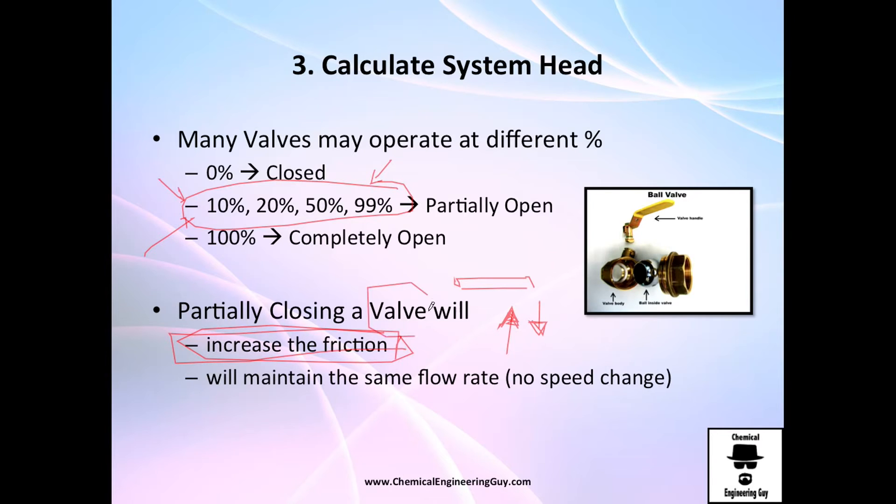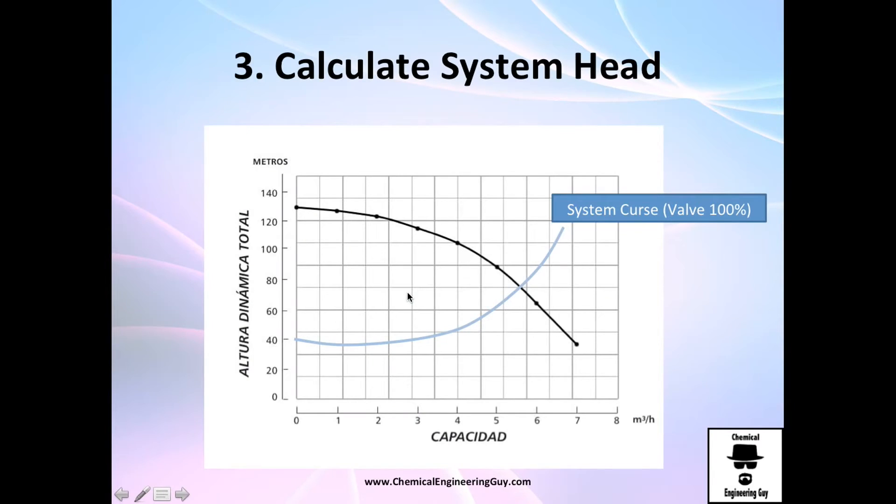For example, we've got a very nice system here. With 100% valve opening, if we close it - let's say we have one valve and if we close that valve to 60%, we're going to increase friction. Actually the increase is between 60% final operation and 100%, so there is an increase of 30 meters only because you close 40% of that valve.